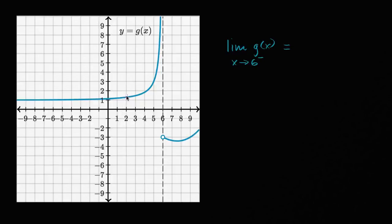So g of two looks like it's a little bit more than one. G of three, it's a little bit more than that. G of four looks like it's a little under two. G of five, it looks like it's around three. G of 5.5 looks like it's around five. G of, let's say, 5.75 looks like it's like nine.